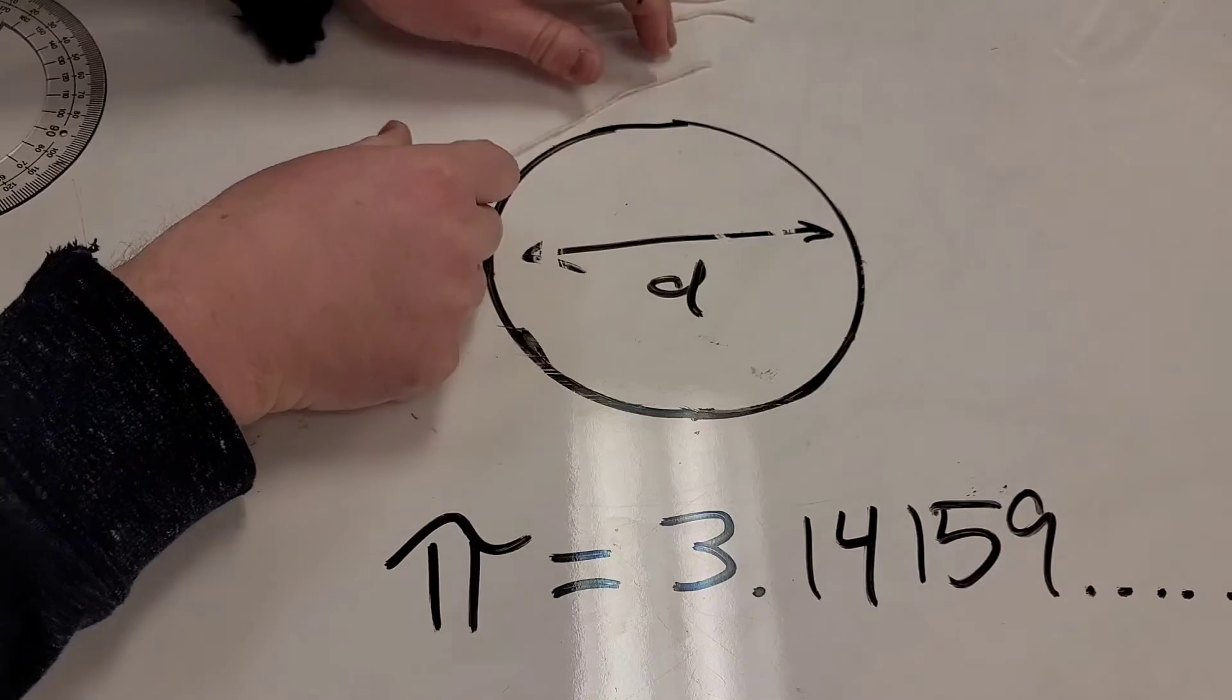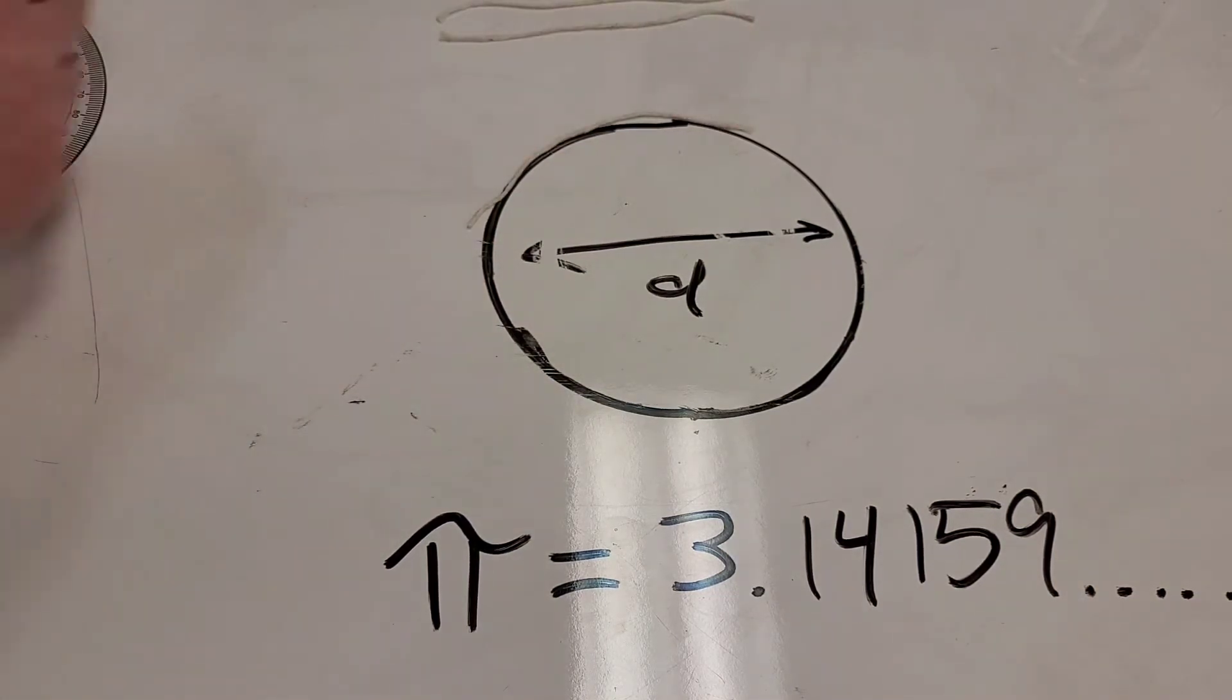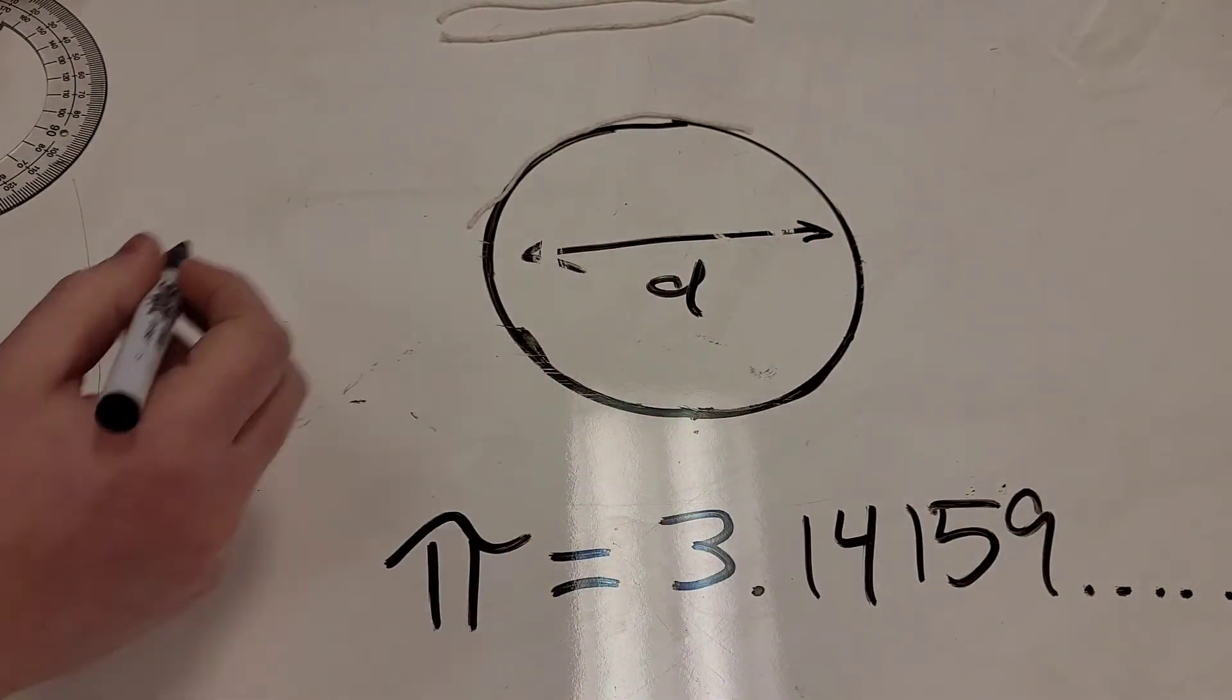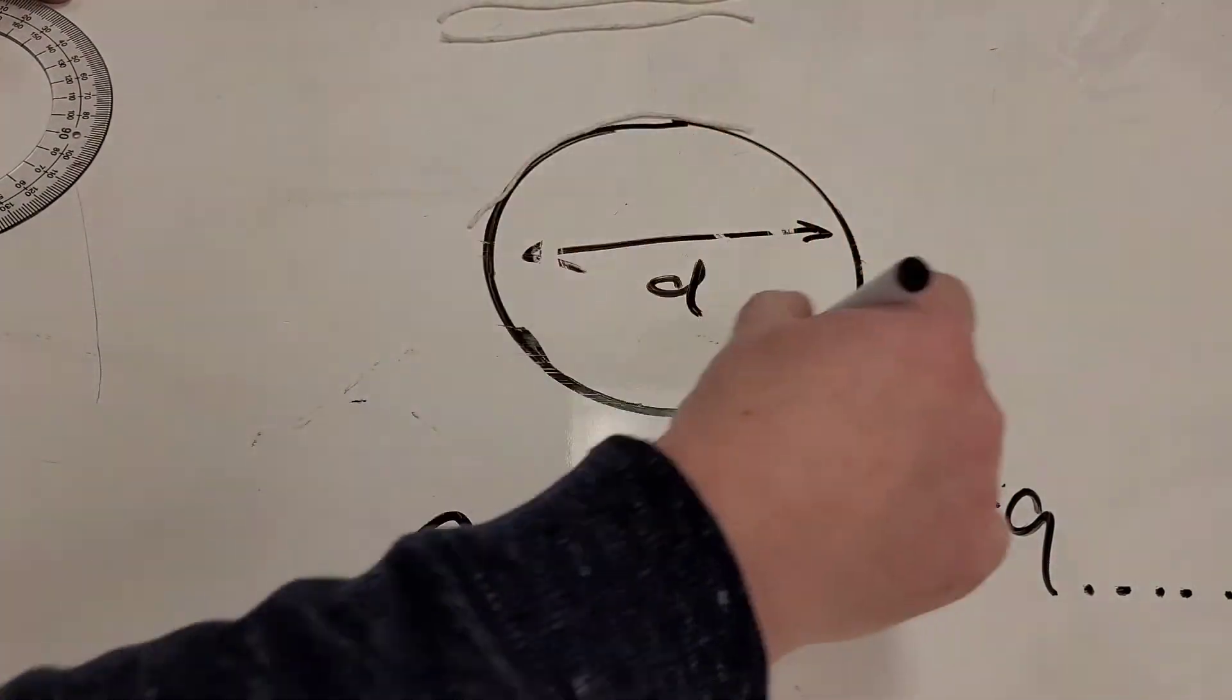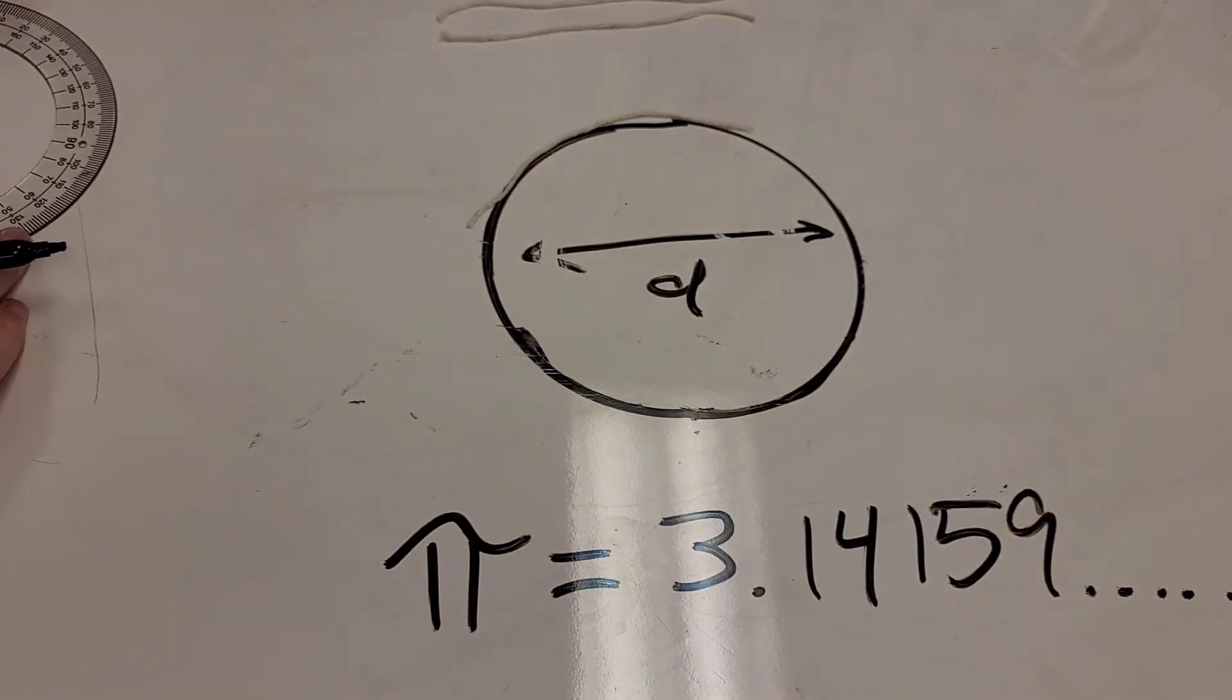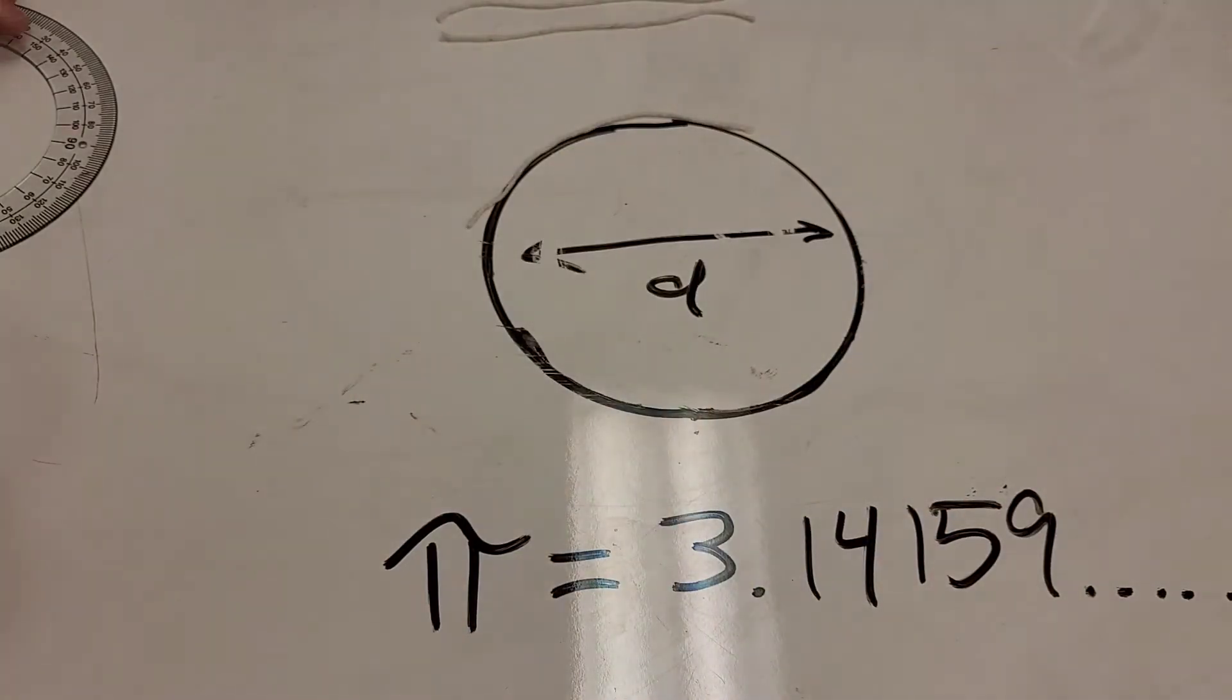Now I'm going to take these strings and start wrapping them around the circle to show the circumference. For those of you needing a review of math terms, the circumference is the distance around the circle. It's kind of like the perimeter of a square or rectangle, but it is the outside border of a circle. That is the circumference.